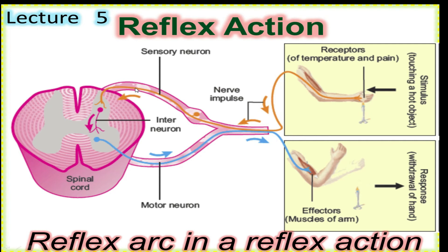The sensory neurons carry the impulse to the spinal cord. There, interneurons pass the signal to motor neurons. The motor neurons deliver the message to the muscles, which contract, and the hand is withdrawn.